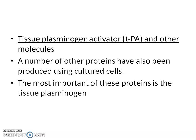Several other recombinant molecules can be produced in large quantities using animal cell culture, including vaccines, monoclonal antibodies, interferons, and tissue plasminogen activator. Blood factor 8, produced using recombinant DNA technology from animal cell culture, is used for treating Haemophilia A patients.